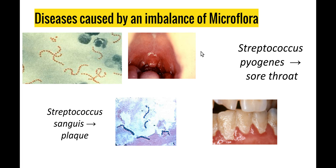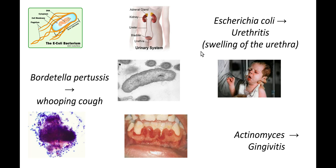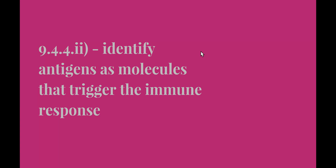There are a couple of other diseases caused by an imbalance of microflora. A sore throat is one example. Plaque on our teeth is caused by an imbalance of microflora in the mouth — brushing well and using mouthwash helps keep that microflora in check. E. coli can cause urethritis, which is swelling of the urethra — the tube running from the bladder to outside the body. Whooping cough and gingivitis, which is severe swelling of the gums, are further examples.